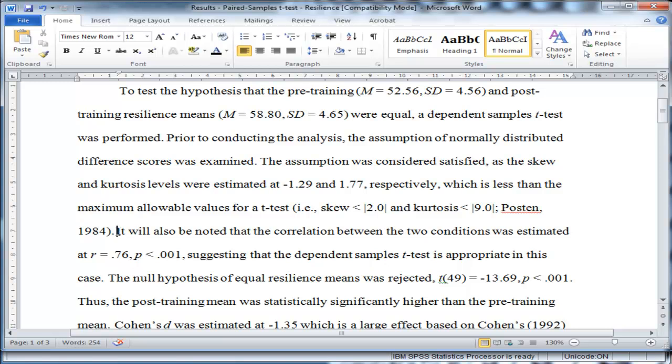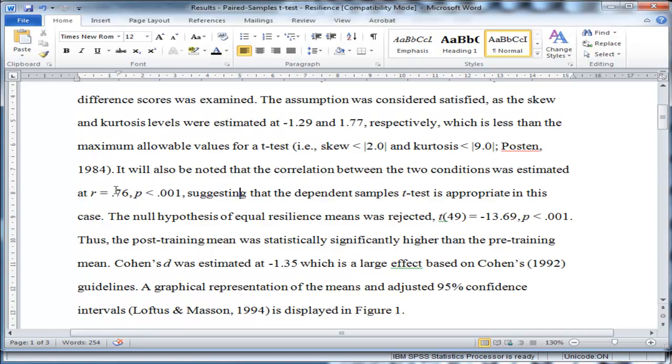The next sentence I do write, though, is something that's important. You don't see it terribly often. It will be noted that the correlation between the two conditions was estimated at r = .76, suggesting that the dependent sample t-test is appropriate in this case. The dependent sample t-test assumes correlated conditions. And in this case, the correlation is 0.76. So someone who's resilient at time 1 tends to be resilient at time 2. And you expect to see that correlation. And I like to see it reported. What is exactly the correlation between time 1 and time 2?